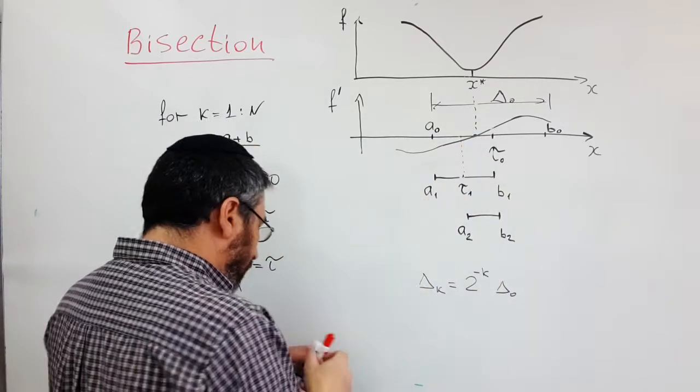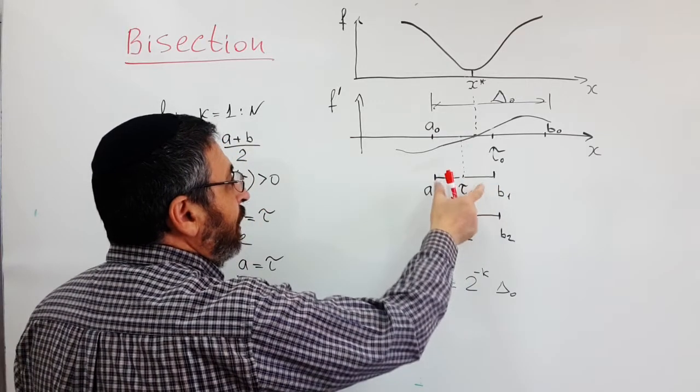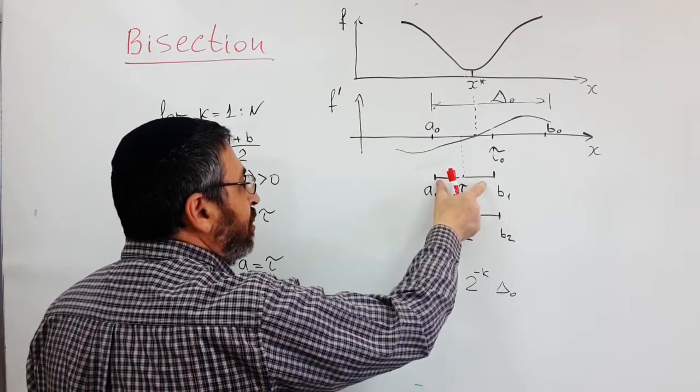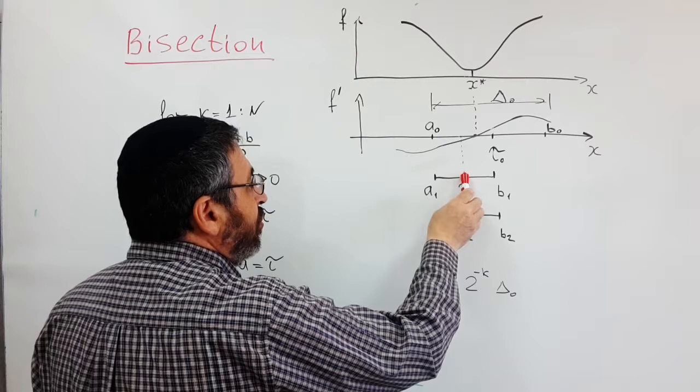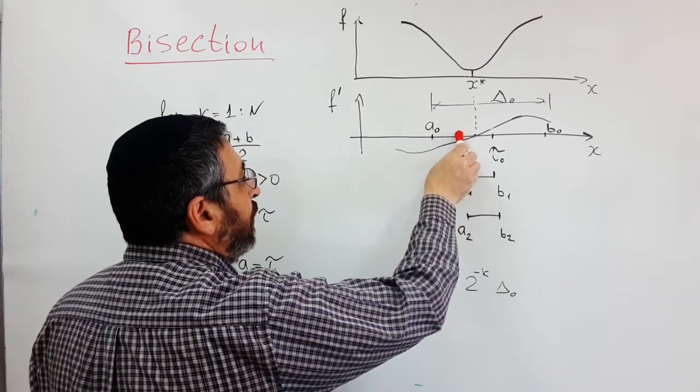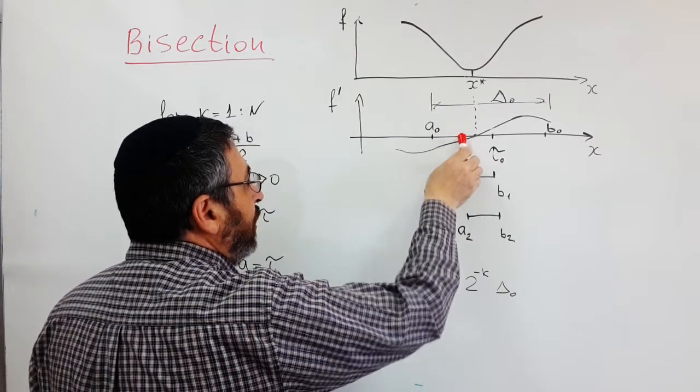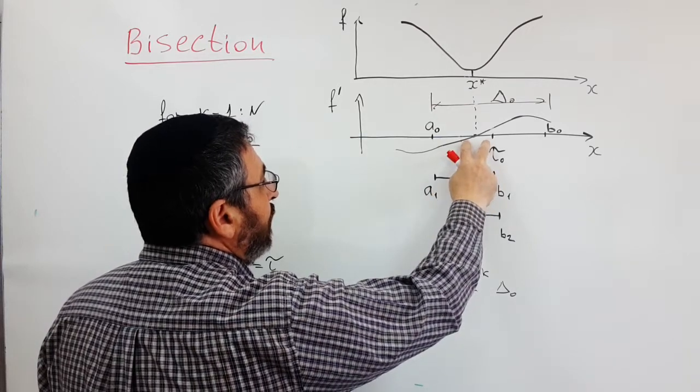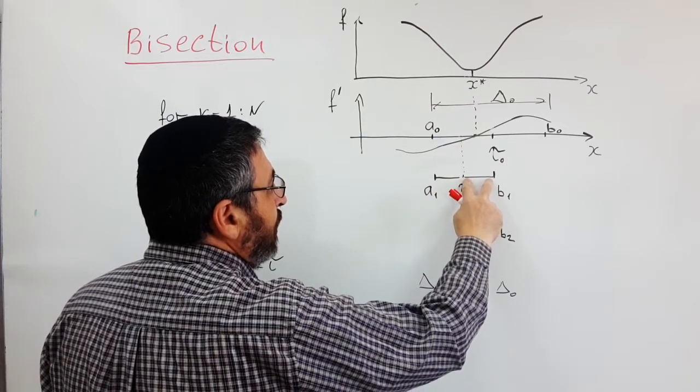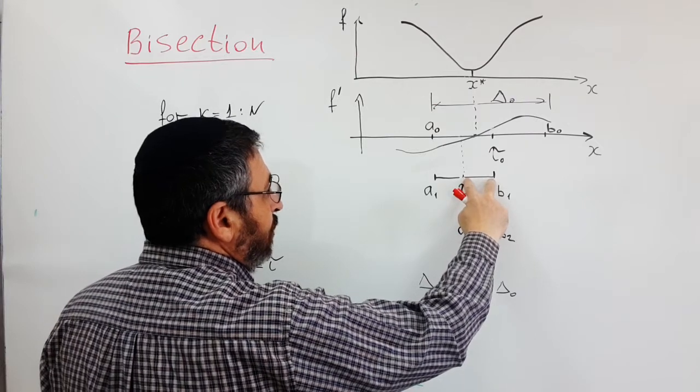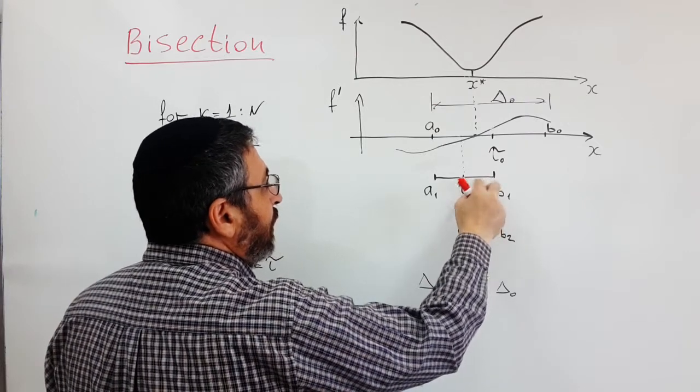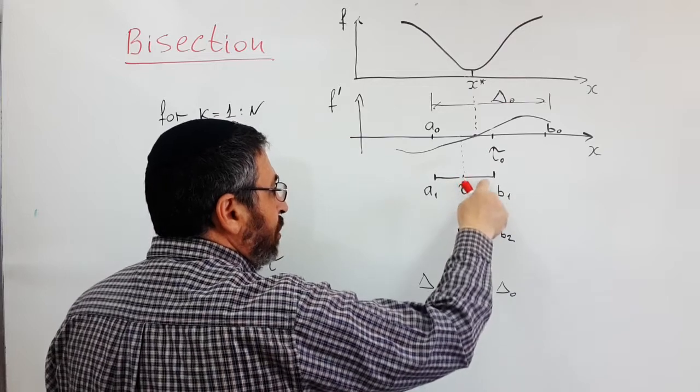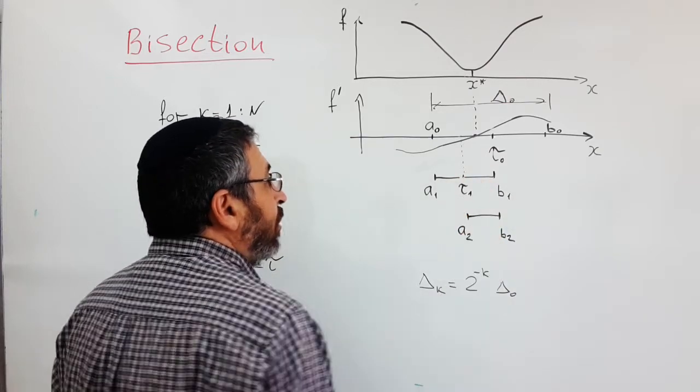In our example we choose the left sub-interval and again take the middle point and evaluate the function at this middle point and check its sign. Now we see that the sign is opposite to the sign of the right side of the new interval, so we choose the right sub-interval and so on.